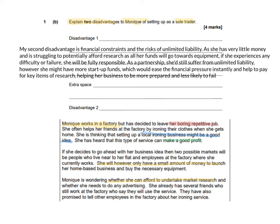My second disadvantage is financial constraints and the risks of unlimited liability — that's my main point. As evidence: she has very little money and is struggling to potentially afford research, as all her funds will go towards her equipment. For reasoning: if she experiences any difficulty or failure, she'll be fully responsible. Now as a partnership she'll still suffer from unlimited liability — which is a mistake that many students were making, thinking that a partnership needed to have limited liability. That's not the case. Remember, you only have limited liability when you start selling and issuing shares. However, as a partnership she might have more startup funds, as both partners can bring in those funds, and this would ease the financial pressure instantly and help for key items of research, helping the business to be more prepared and less likely to fail.